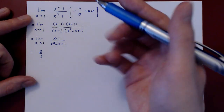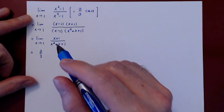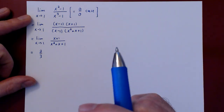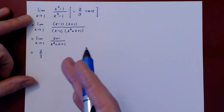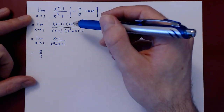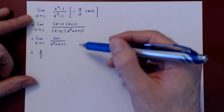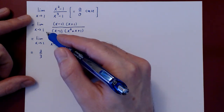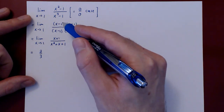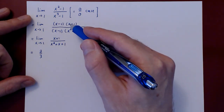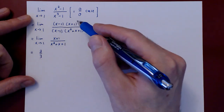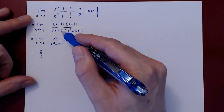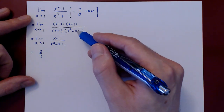You might think this is the end of it, but any time you think you have fully understood a problem, it is always good to take a second look and try to look at the solution from a different angle. As x approaches 1, the term x plus 1 approaches 2, and on the denominator, x squared plus x plus 1 gets closer and closer to 3.